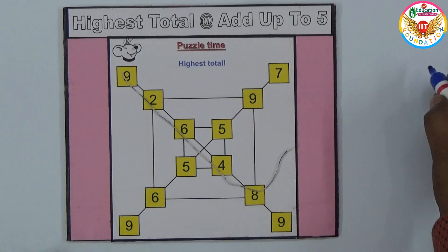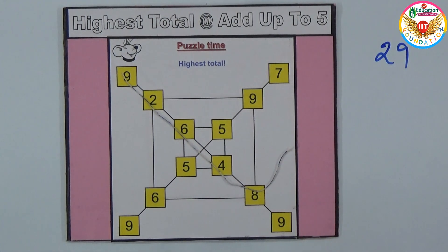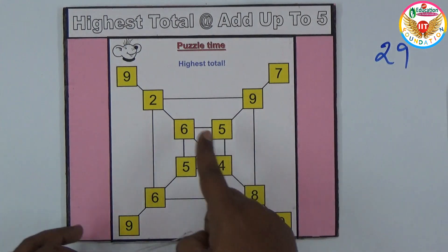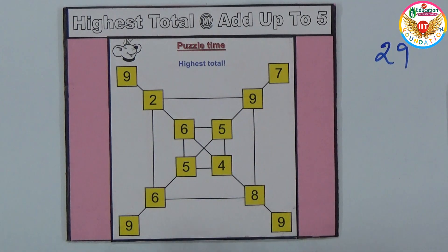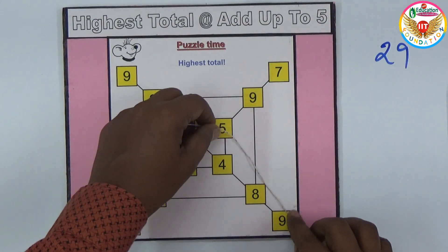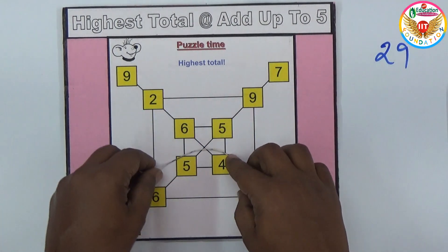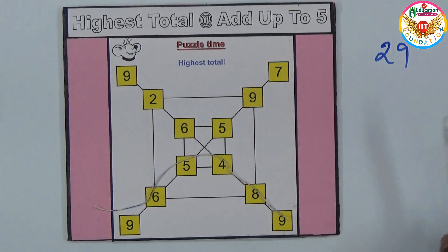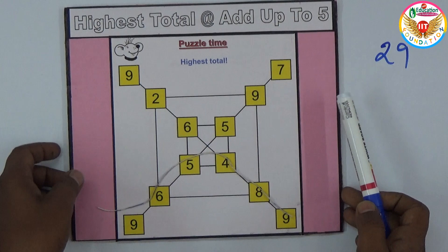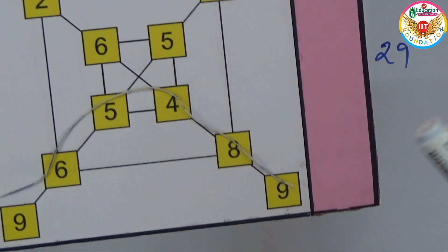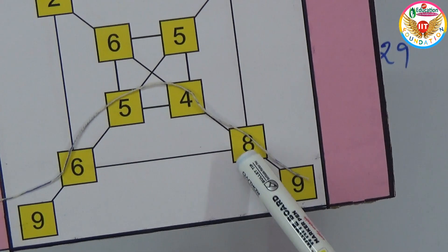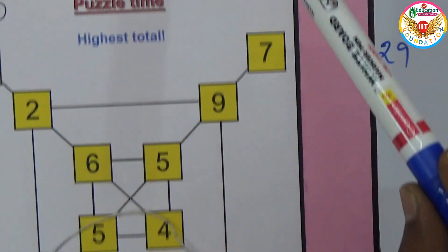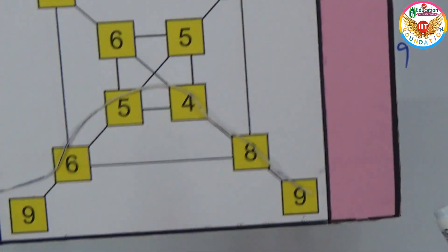But you should make the highest total. Now just change this. To get the highest number I need some big numbers. For example, take from 9, so 9, 8, 4 - you can go anywhere but it should be on the same line. I'm going in this way on this line, but only five numbers, so up to 5 only you should add.